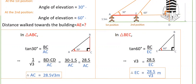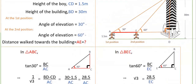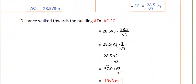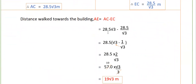Now that we know AC and EC, we can find AE. AE equals AC minus EC — subtracting EC from AC gives the distance walked towards the building. So AE equals 28.5 root 3 minus 28.5 by root 3. Taking 28.5 as common: 28.5 into (root 3 minus 1 by root 3). Taking LCM gives 28.5 into (3 minus 1) by root 3, which is 28.5 into 2 by root 3, that is 57 by root 3. Rationalizing gives 57 root 3 by 3, which equals 19 root 3 meters. So the distance walked towards the building is 19 root 3 meters.